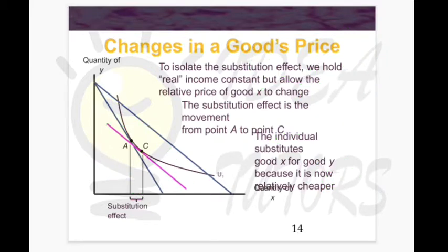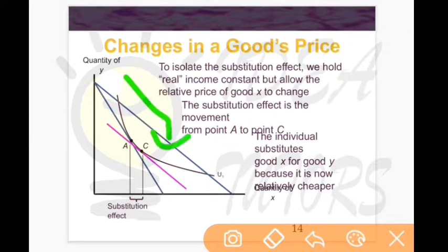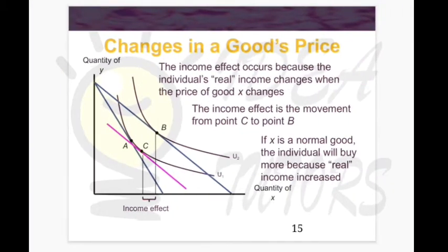For the income effect, we draw a new budget line parallel to the pink line, meaning these two lines have the same slope. Now we drop the assumption that real income is constant, allowing real income to change. The budget line shifts to this new parallel line, placing the consumer on a new indifference curve at a new utility maximization point — point B. The total price effect takes us to point B.